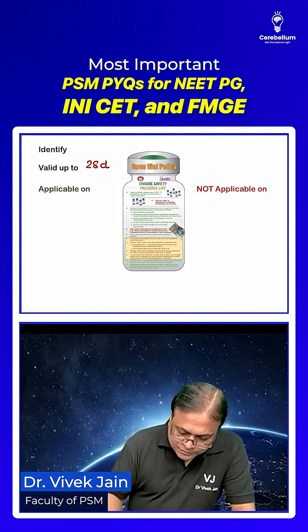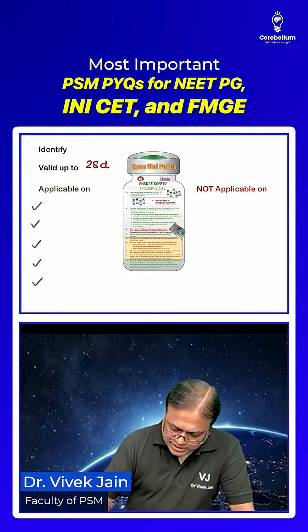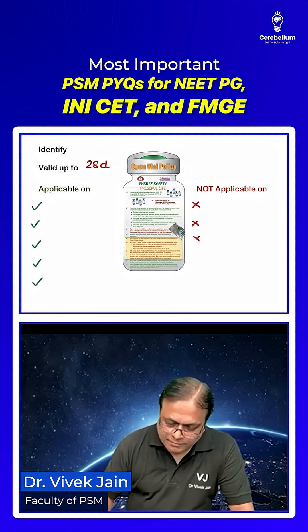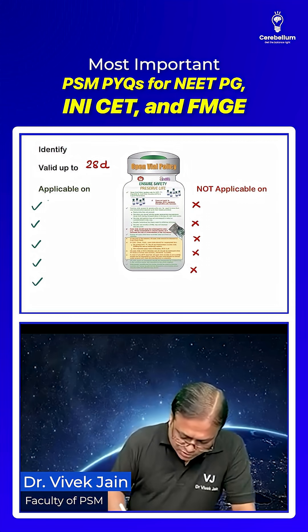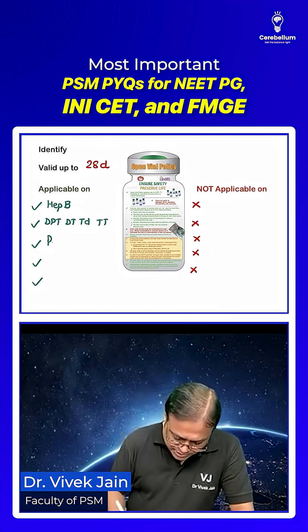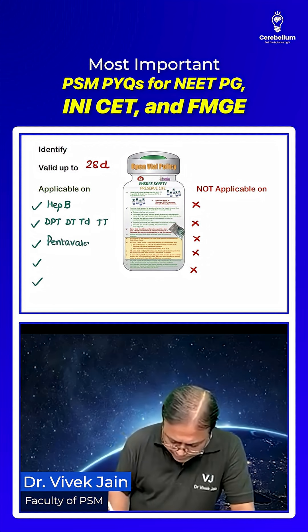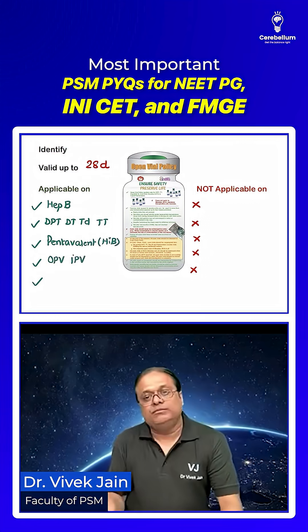For which vaccines is it applicable, and for which is it not applicable? It is applicable on the T-series of vaccines: Hepatitis B, DPT, DT, TD, TT. It is also applicable on Pentavalent (which includes Haemophilus Influenza B), OPV, IPV — both live and killed.